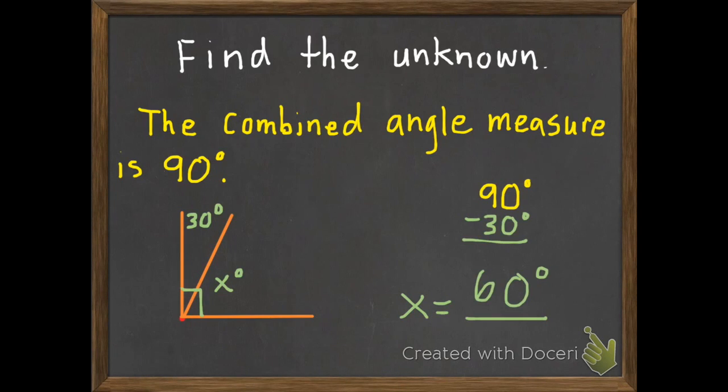Okay, so if I had 90 degrees, and I know 30 of them, the unknown part that's left is 60 degrees.